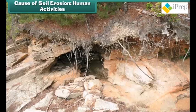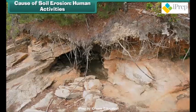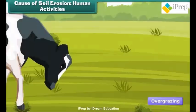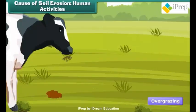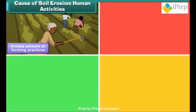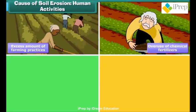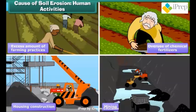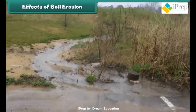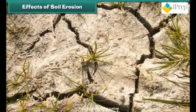Soil erosion is in itself a naturally occurring process, but in many cases it is increased by human activities. Some of these include deforestation, overgrazing by animals, improper or excess amount of farming practices, trail building, overuse of chemical fertilizers, housing construction, mining, and more.